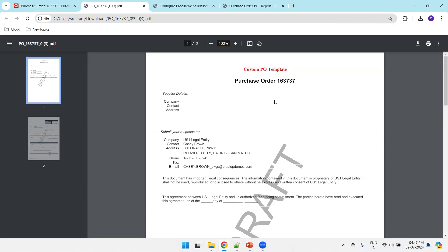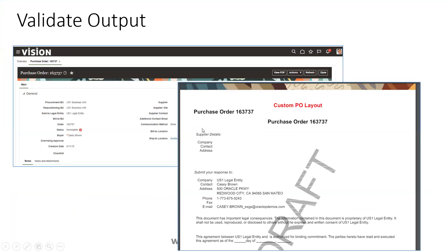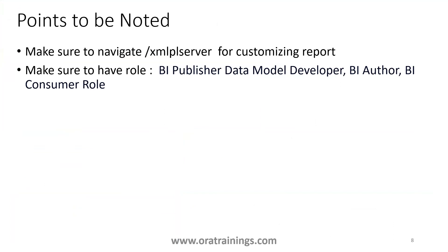Open the PDF and you can see the custom template — the Version 2 template. This is how we can modify the template. In this session we discussed only the modification of the template layout, not the data model. We'll discuss data model modification in the next session. Two important points: make sure you navigate via slash XMLP server, and you require appropriate roles — BI Publisher Data Model Developer role, BI Author role, or BI Consumer role added to your user.